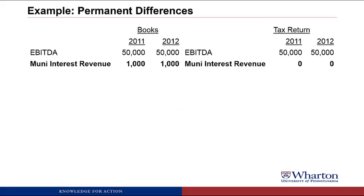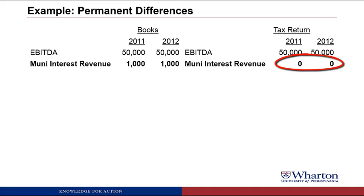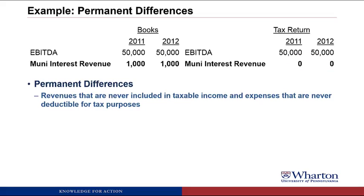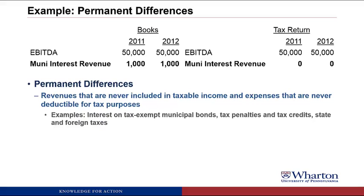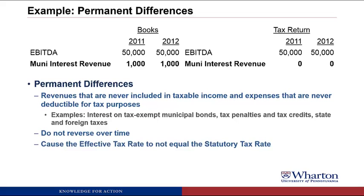The first type of difference is a permanent difference. Let's say the company has municipal bond interest revenue — $1,000 of revenue on the financial statements in 2011 and 2012. For the tax return, municipal bond interest revenue is tax-exempt, so it doesn't go on the tax return at all. A permanent difference is a revenue that's never included in taxable income, or an expense that's never deductible for tax purposes. Key word: never. It shows up on the books but never shows up on the tax return.